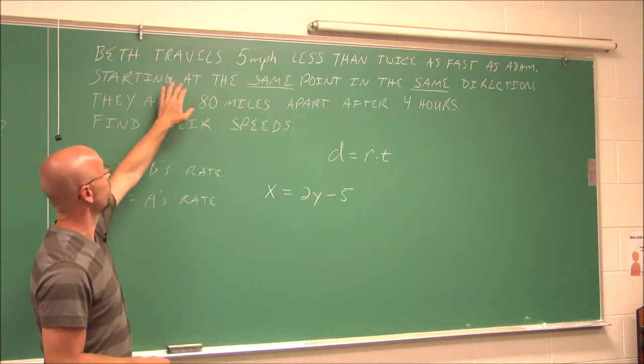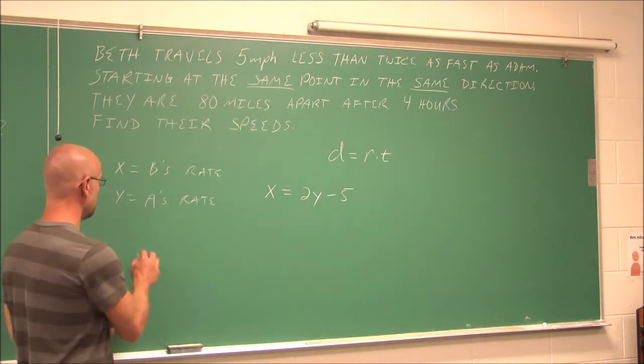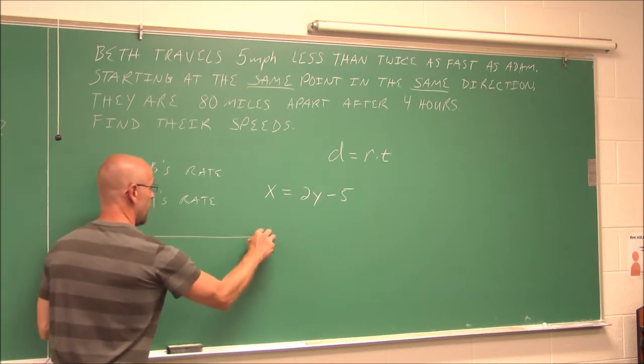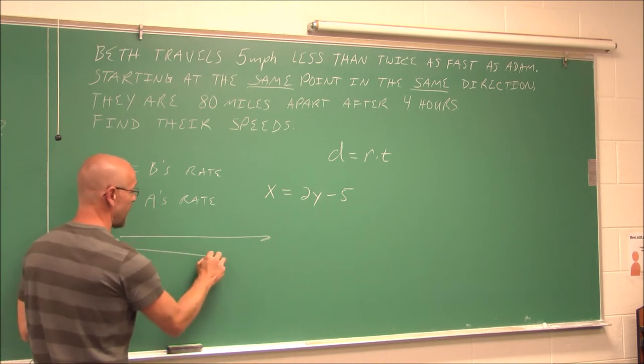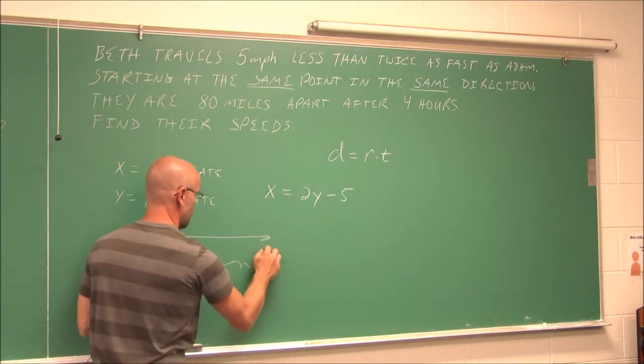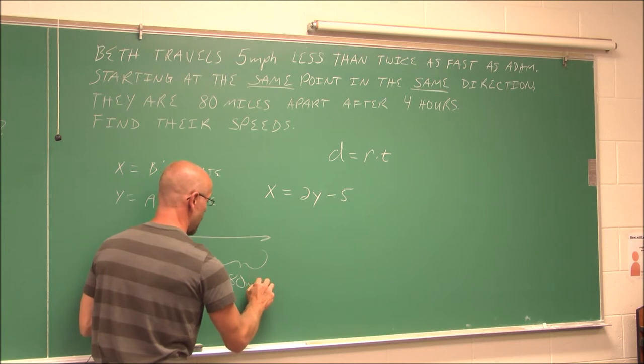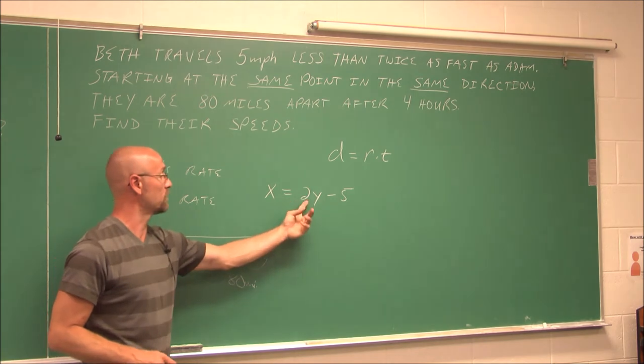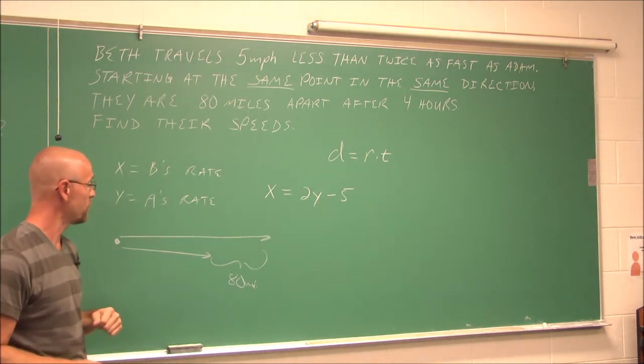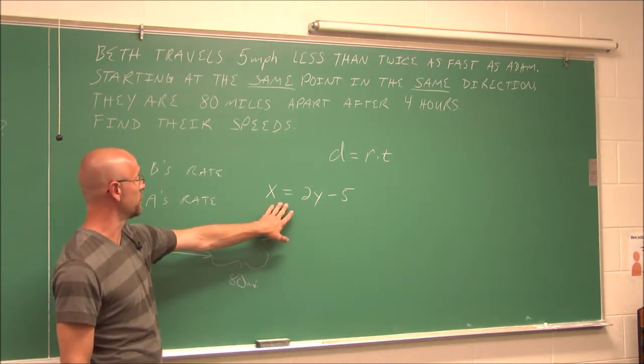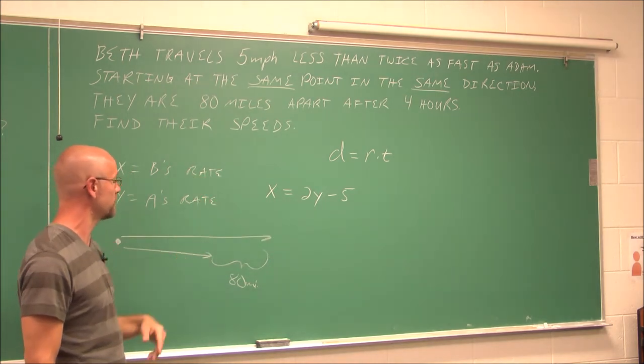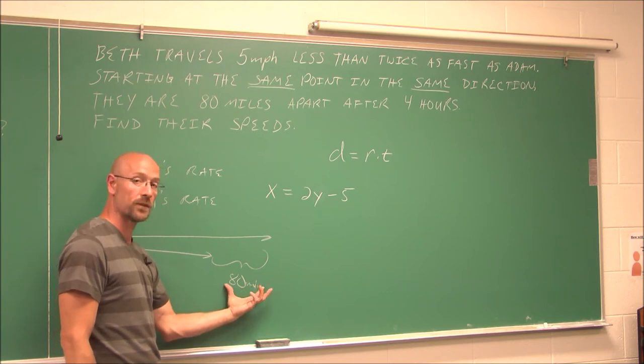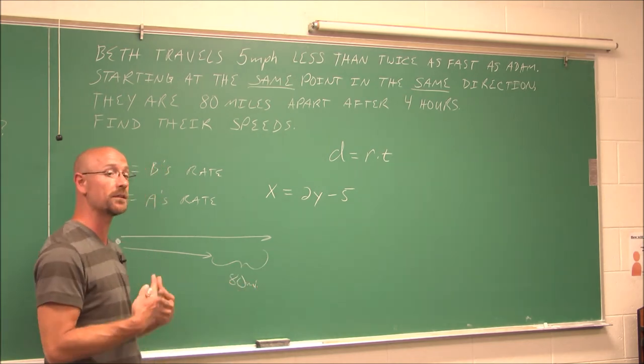In the next statement, starting at the same point in the same direction, so maybe I want to draw an illustration. They start at the same point, and they go in the same direction. But after four hours, they're 80 miles apart. So Adam's not going as fast, because Beth is going twice as fast as him, less 5 miles an hour. So we have our first equation here, the relationship of their rates. And now we have to look at their distances. Well, if we have a difference of 80 miles, that is the key term there, difference.